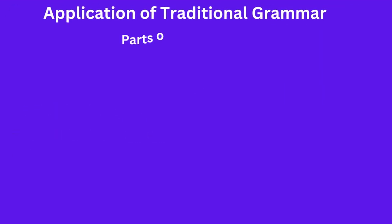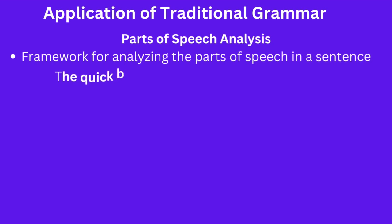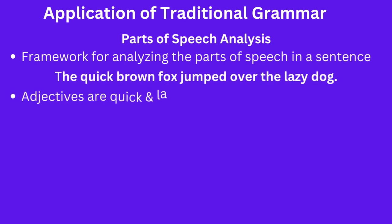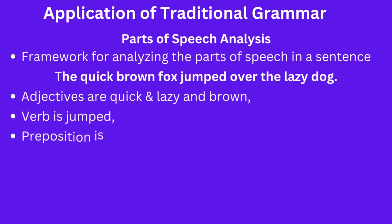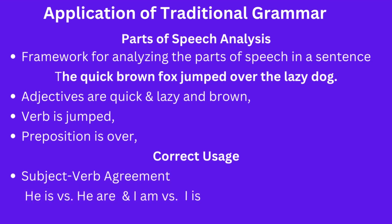Traditional grammar also provides analysis of parts of speech, offering a framework for analyzing the parts of speech in a sentence. For example, in the sentence 'The quick brown fox jumped over the lazy dog,' traditional grammar would identify 'quick,' 'lazy,' and 'brown' as adjectives because they modify nouns, 'jumped' as a verb, and 'over' as a preposition.